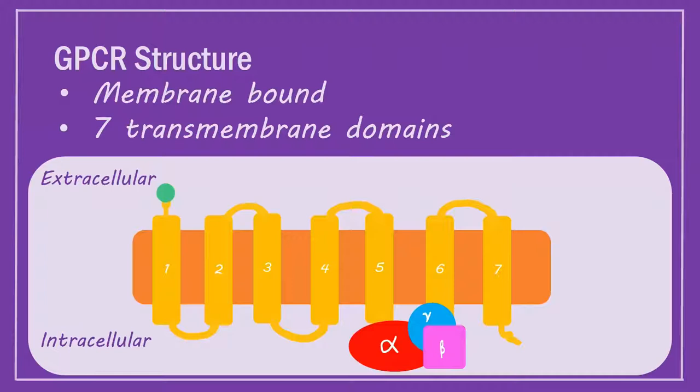GPCR structure. GPCRs, also known as metabotropic receptors, are membrane bound consisting of seven alpha-helical transmembrane domains.